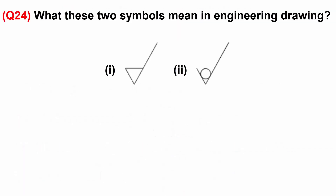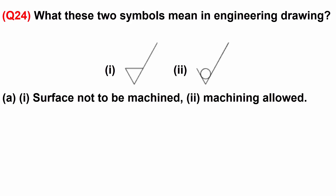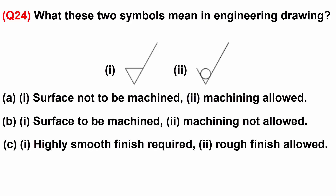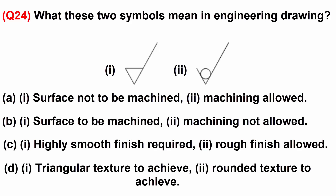What do these two symbols mean in engineering drawing? A: 1 — surface not to be machined, 2 — machining allowed. B: 1 — surface to be machined, 2 — machining not allowed. C: 1 — highly smooth finish required, 2 — rough finish allowed. Or D: 1 — triangular texture to achieve, 2 — rounded texture to achieve.